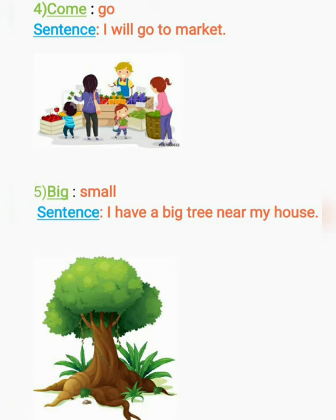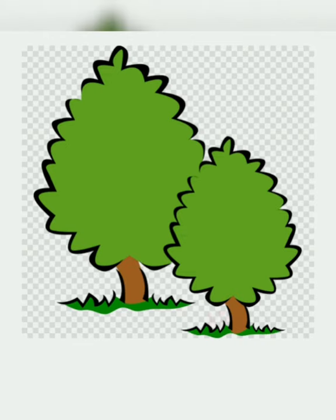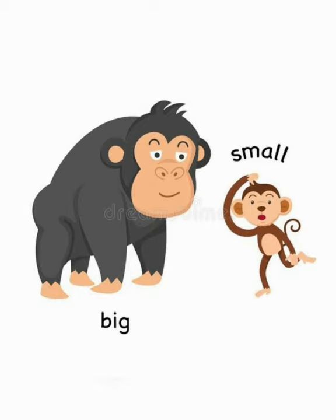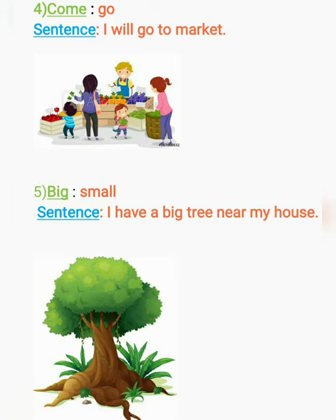Next word is big, یعنی کی بڑا. The opposite of this word — इसका विलोम शब्द — is small, یعنی کی چھوٹا. Sentence: I have a big tree near my house. میرے گھر کے پاس ایک بڑا سا پیڑ ہے.